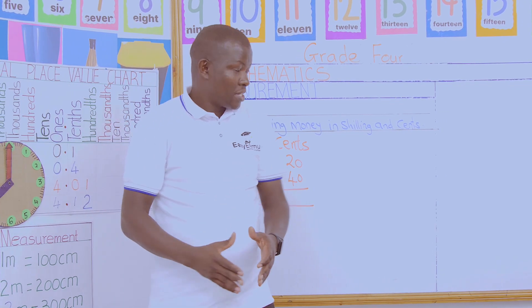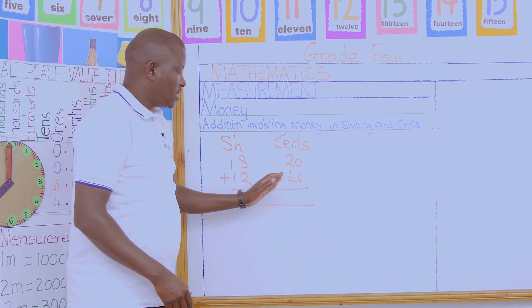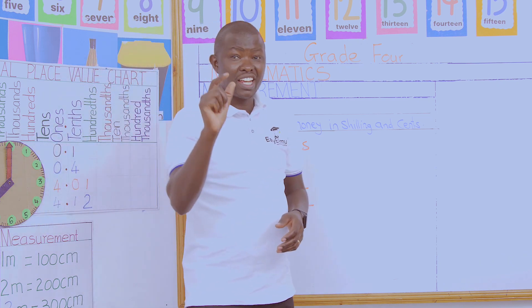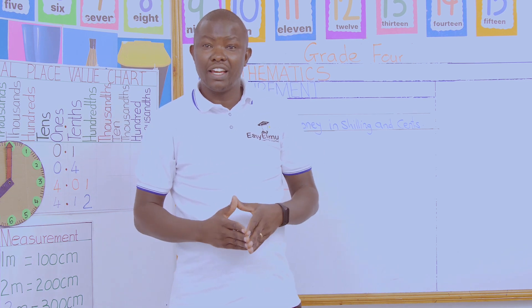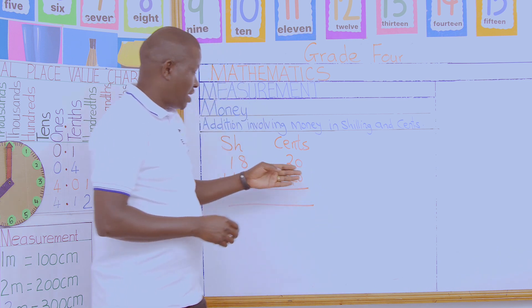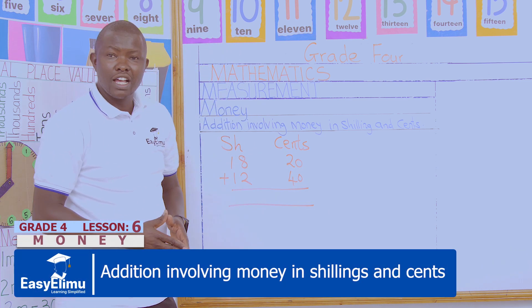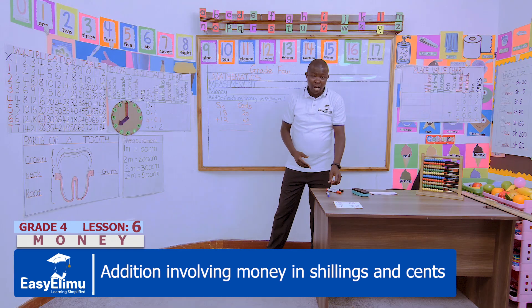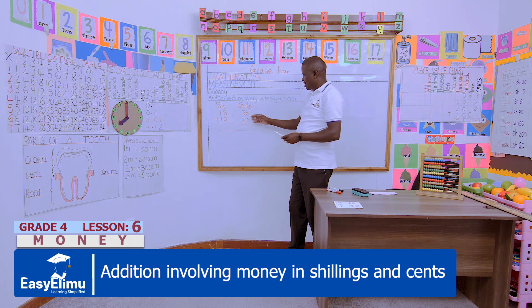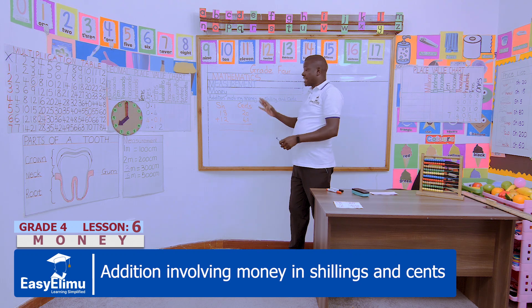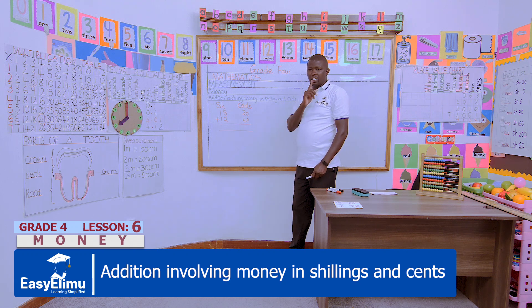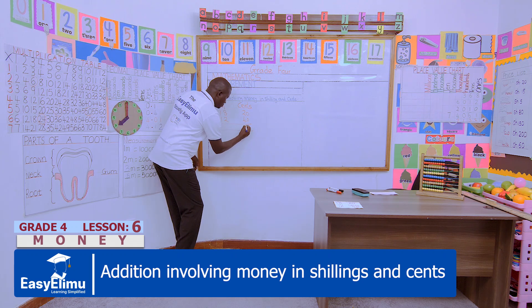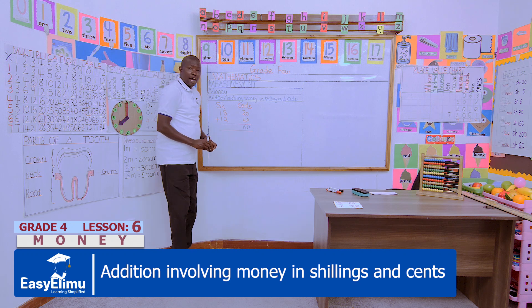Can we start? In our groups — Victoria and your group — 20 cents add 40 cents. Remember, this is very key: one shilling is equivalent to 100 cents. 20 cents plus 40 cents — how many cents do you have? Victoria, what have you gotten in your group? 60 cents. So where there are cents, write 60. Remember also, alignment of the digits is very key.